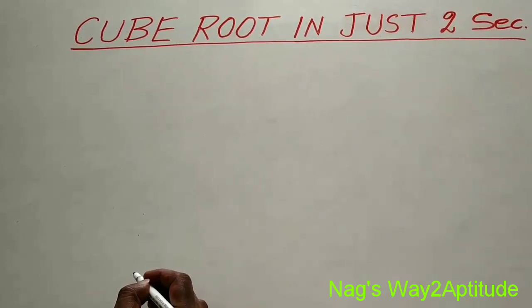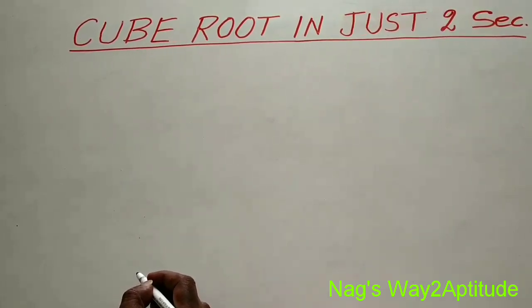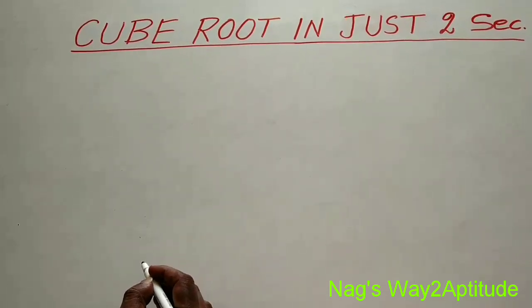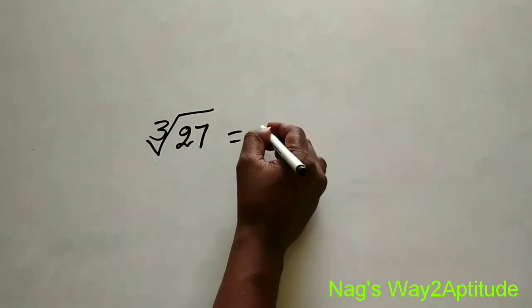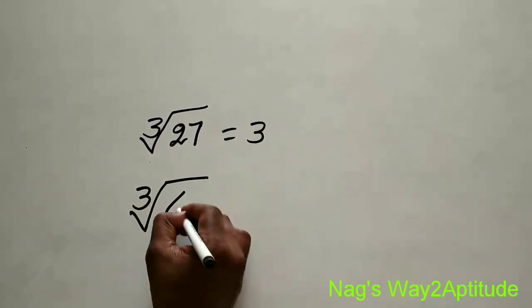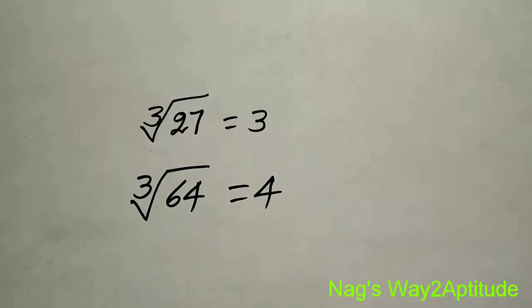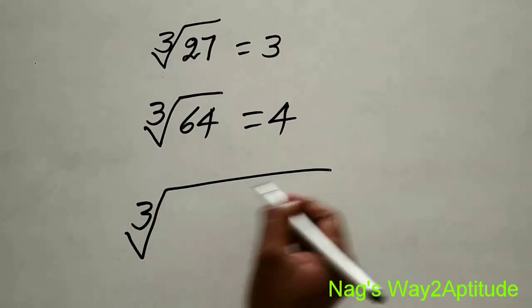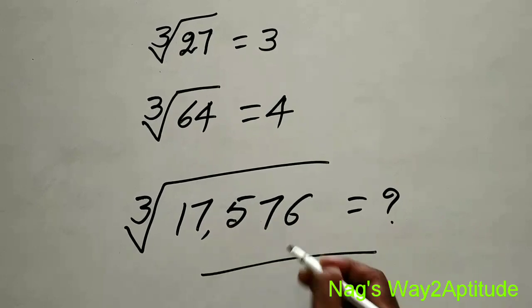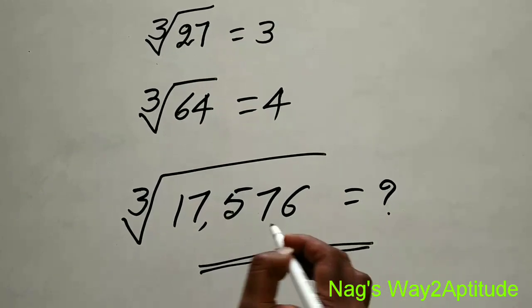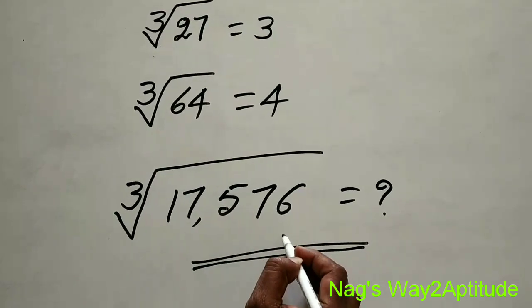Welcome to our channel Knox Way to Attitude. In this video today we are going to see how to find the cube root of a given number in just 2 seconds. When we find the cube root of any smaller number we can easily do it — for example, cube root of 27 is 3 and cube root of 64 is 4. But when we deal with bigger numbers like cube root of 17,576, it may be somewhat difficult. By following the simple trick I am going to tell you, you can easily find the cube root of bigger numbers like 17,576.